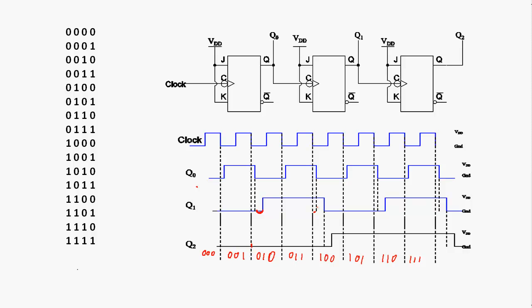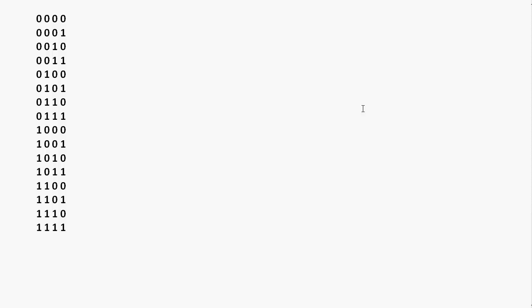The upside to asynchronous counters is that they're very simple to design. You just take however many bits you want and cascade these flip-flops where the output of one feeds into the clock input of the next. To make a better counter it's going to be more complicated, but we're going to want all the flip-flops to change at the same time, so we need to create a synchronous counter.